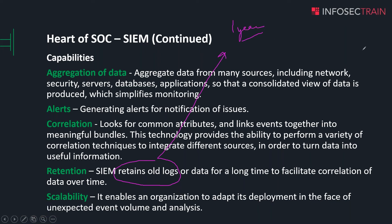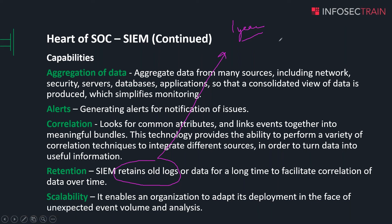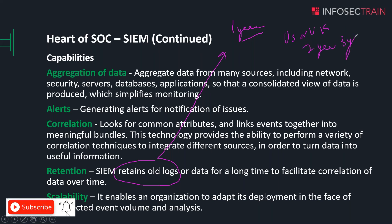That means you can go one year back and check what happened. Historical analysis, timeline analysis, and future prediction are all possible. In the US or UK, they follow a different standard — two to three years — but it totally depends on the infrastructure as well.